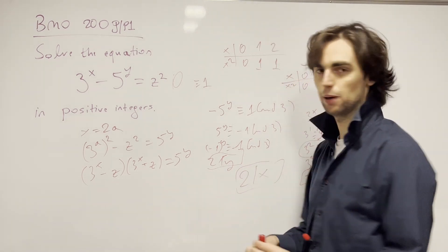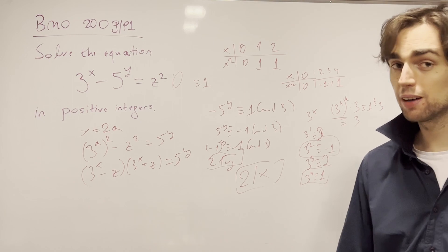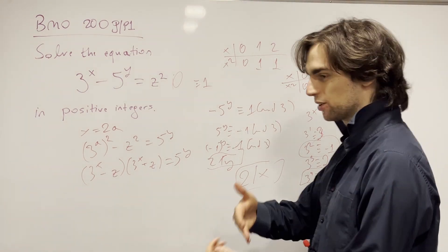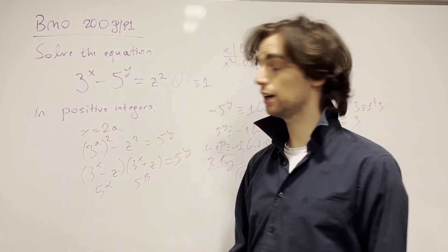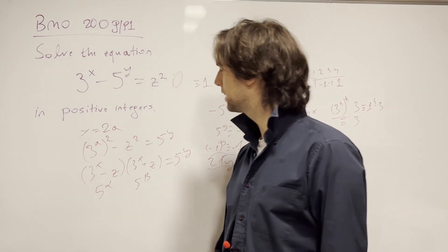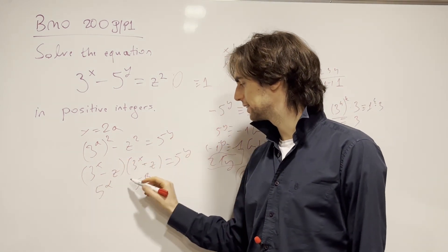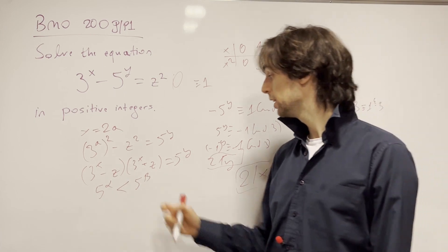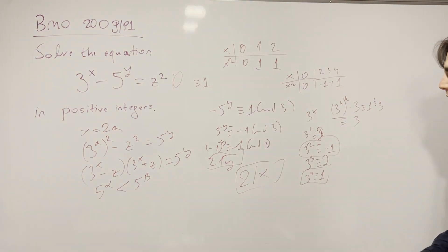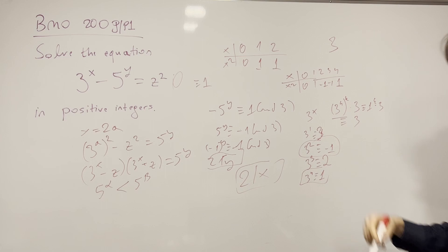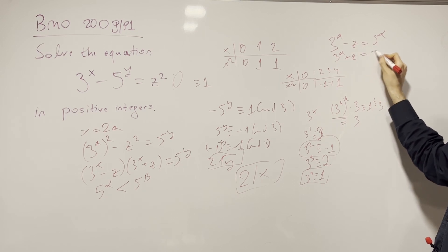We have a · b = 5^y. What are the prime factors of a and b? They can only have 5 as a prime factor, or be 1. So each factor is of the form 5^α and 5^β respectively. Taking z to be a positive integer means the first factor is less than the second, so α < β, and α + β = y.